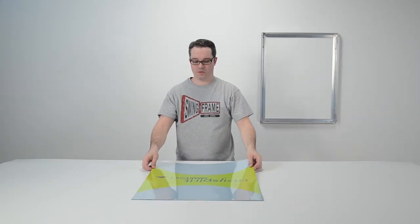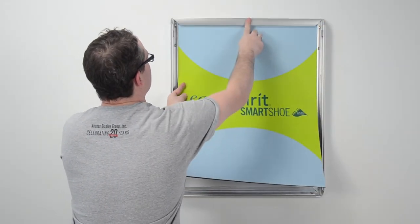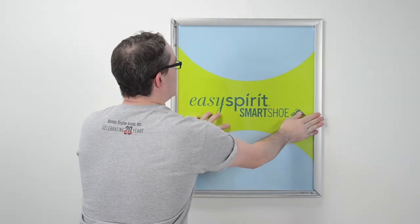Once the materials are aligned, you can then place them into the snap frame and snap the rails shut. It's as easy as that.